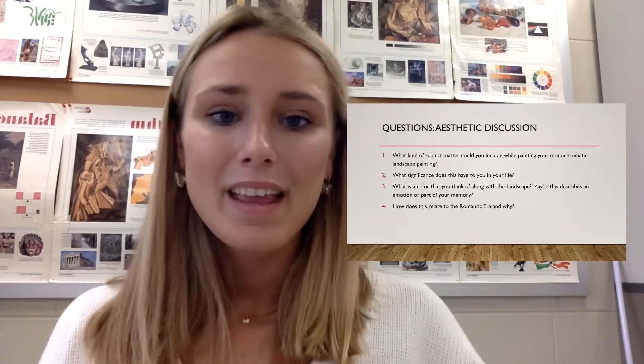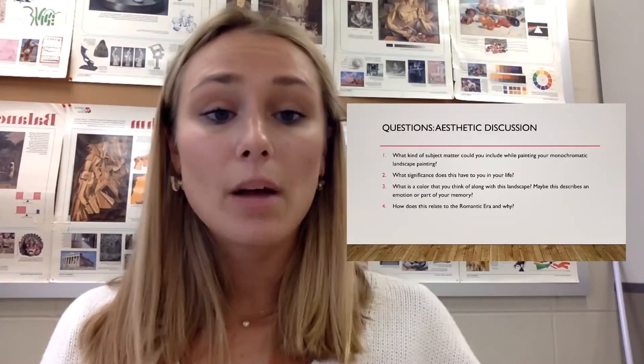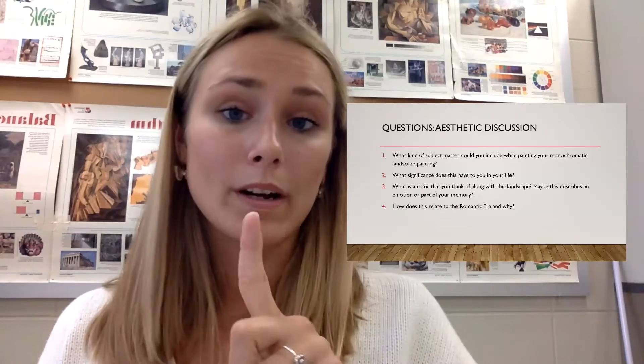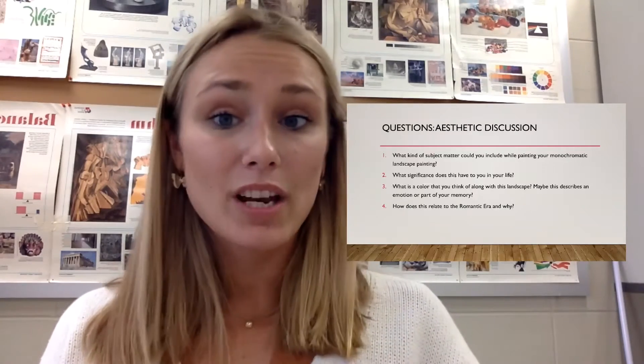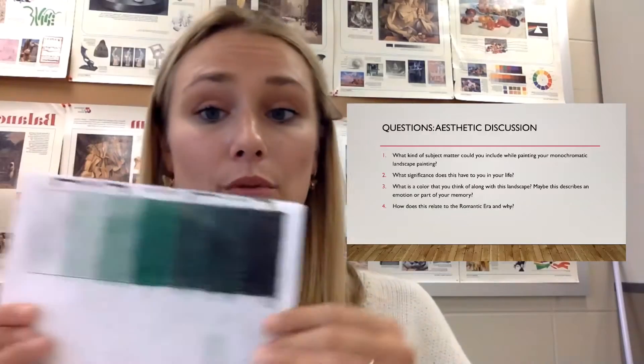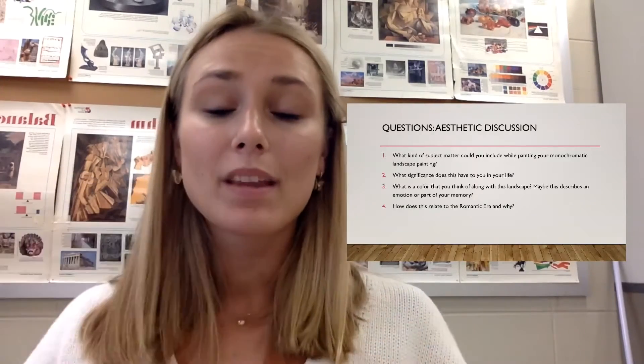And then question three: what color could you think of to use for your monochromatic landscape? Remember, monochromatic means one color. So you need to choose a color from the color wheel, and then you're going to be tinting and shading — using black and white and changing the tone, just like we did on our monochromatic worksheet. You're going to be changing the tone of that color in our monochromatic landscape.